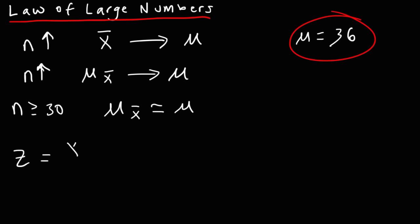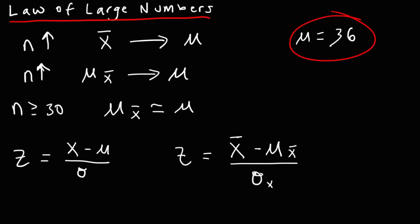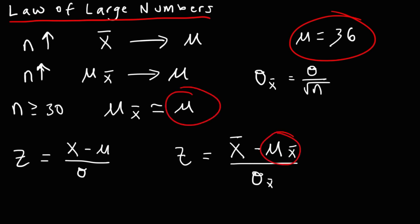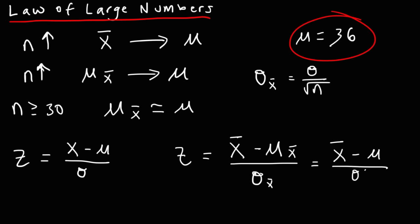This is important for calculating z. For a normal distribution: z = (x − mu) / sigma. For a sampling distribution: z = (x-bar − mu_x-bar) / sigma_x-bar. The standard deviation of the sampling distribution equals the population standard deviation divided by the square root of n. When n is large, mu_x-bar ≈ mu, so the formula becomes: z = (x-bar − mu) / (sigma / sqrt(n)).